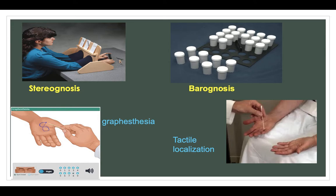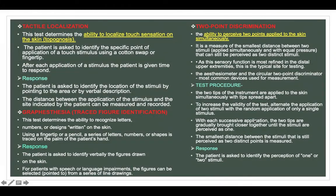Here you can see pictures for stereognosis and barognosis, as well as graphesthesia and tactile localization. Tactile localization (topognosis): this test determines the ability to localize touch sensation on the skin. The patient is asked to identify the specific point of application of a touch stimulus using a cotton swab or fingertip. Response: the patient identifies the location by pointing to the area or by verbal description. The distance between the application of the stimulus and the site indicated by the patient can be measured and recorded.